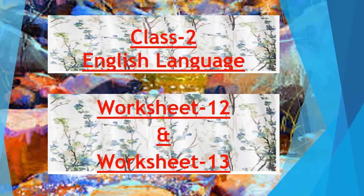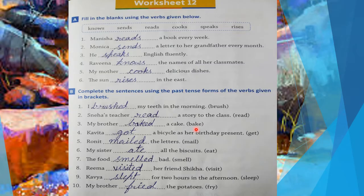Good morning class. This is your English language class and today we will start worksheet number 12 and worksheet number 13. Firstly we will complete worksheet number 12, which is based on verbs. The first question is fill in the blanks using the verbs given below. We have to complete them by using verbs, and these sentences are in simple present tense.